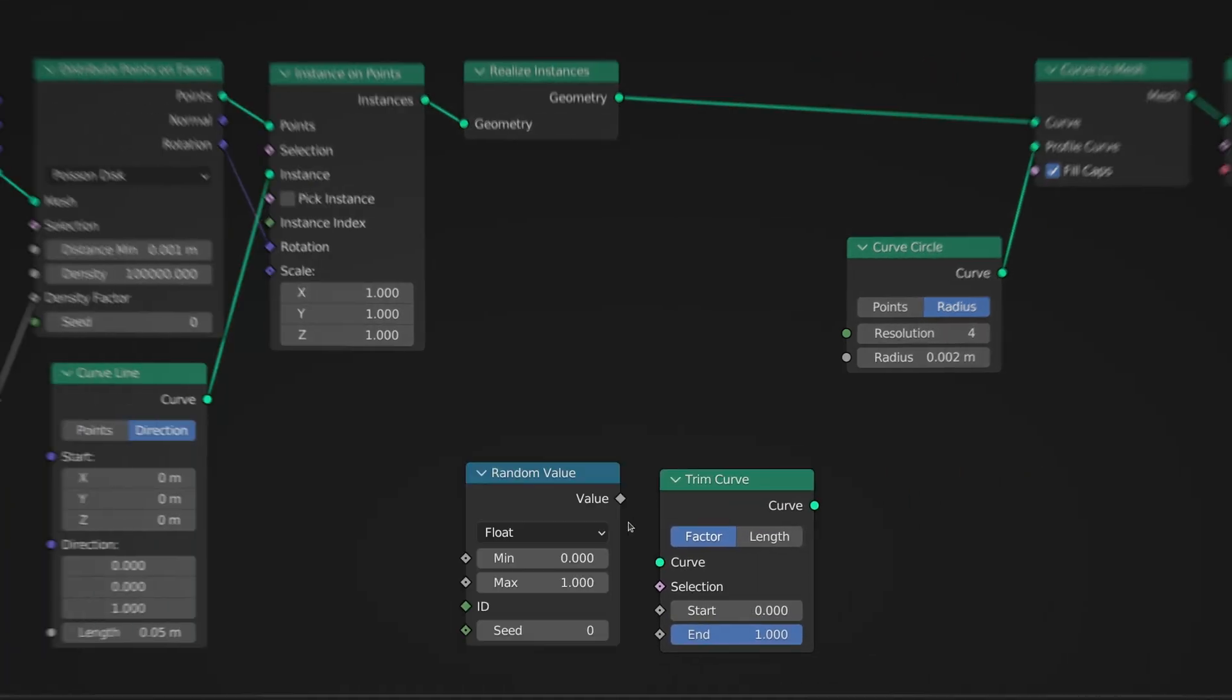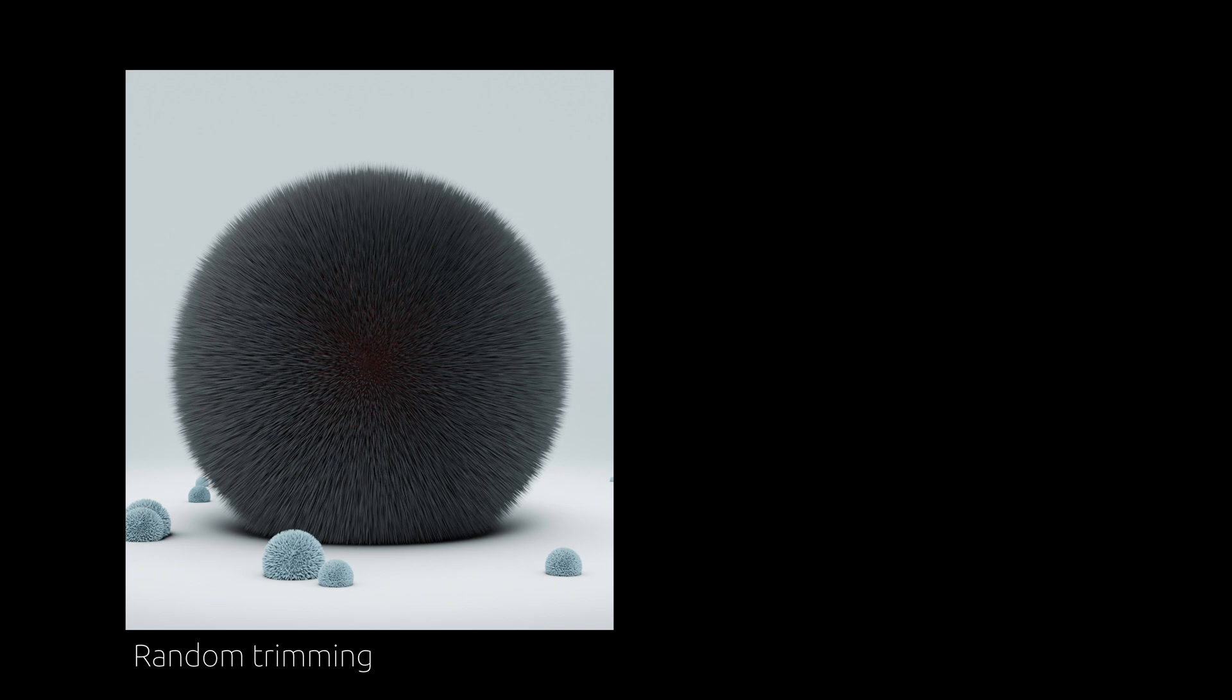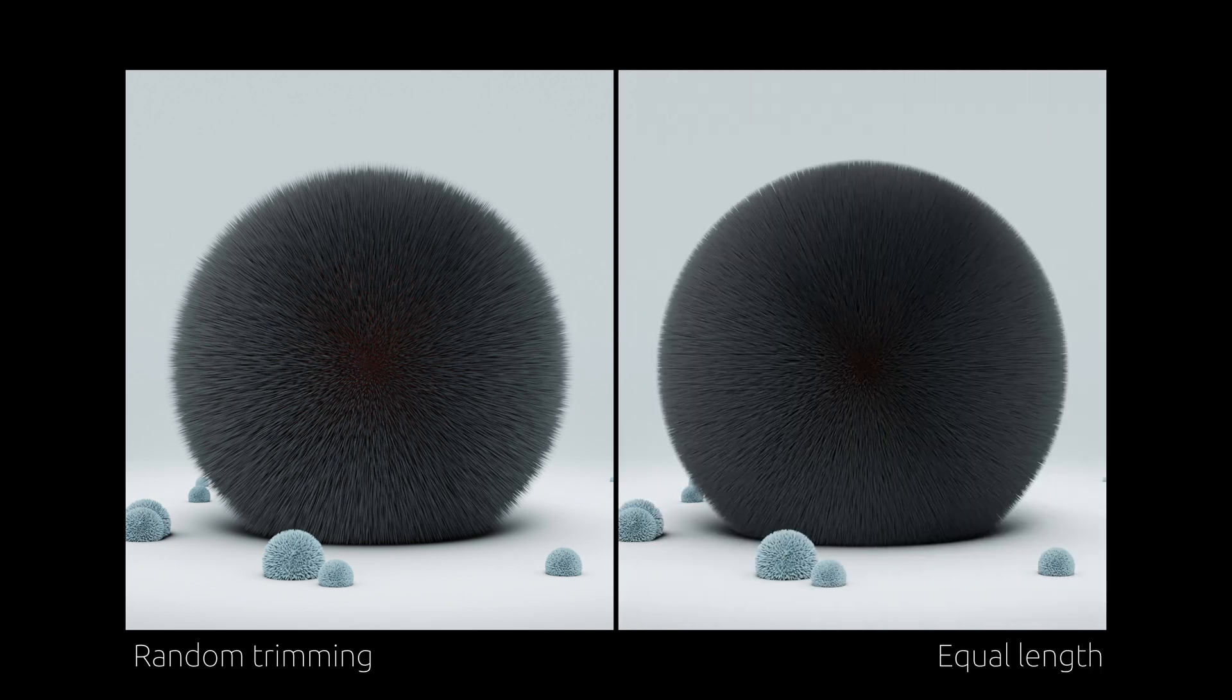On the random value node, we can define the length of the shortest and the longest strand of fuzz. However, to make sure these values are interpreted correctly, be careful to choose the length option on the trim curve node.